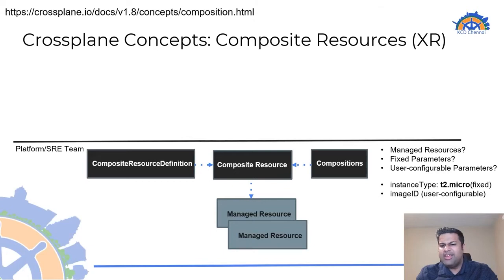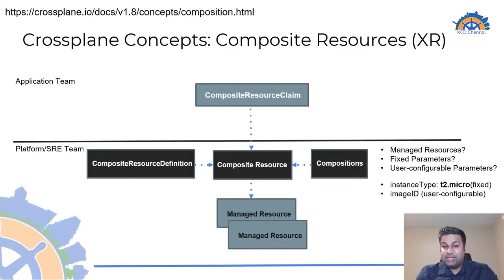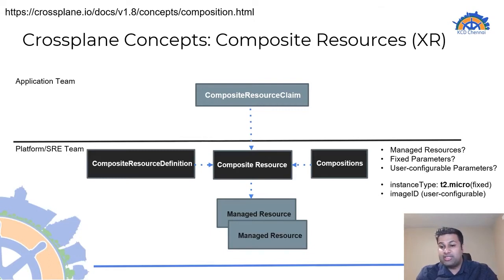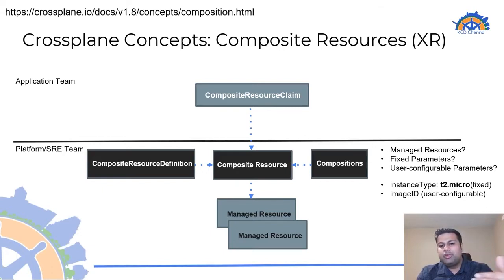The consumers of this composite resource are typically application teams that do not have access to create the composite resource directly. Instead, they would use something known as a Composite Resource Claim. This is similar to the native Kubernetes object called PersistentVolumeClaim, where an application can request a persistent volume of a specific class, size, or access mode. Similarly, when a composite resource claim is created, it contains the reference to the composite resource along with the user-configurable parameters.